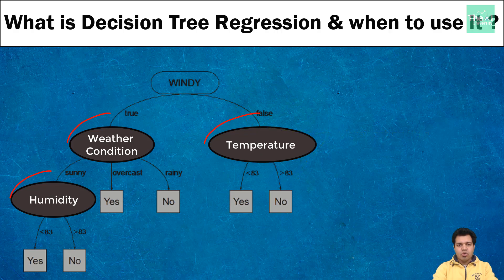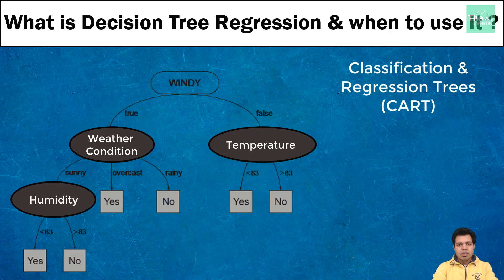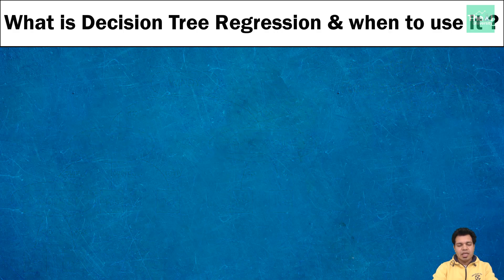Each of these internal nodes represents an attribute on which a particular decision needs to be taken. For example, consider an attribute called weather condition from a weather dataset, which has options such as rainy, cloudy, and sunny. Each leaf node represents a label, which is nothing but the final decision taken after the computation of all the attributes. Decision tree algorithms are sometimes referred to as classification and regression trees because they are suited very well for solving problems related to both regression as well as classification.